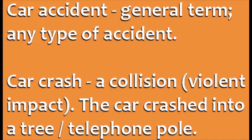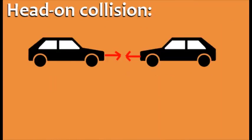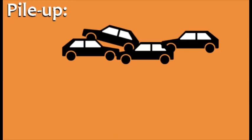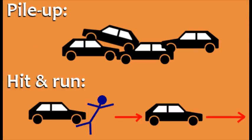Here are four specific types of accidents. When two vehicles crash into each other while traveling in opposite directions, we call this a head-on collision. This is one of the deadliest types of accidents. On the other end of the spectrum is a fender bender — a small accident with very minor damage to the cars involved. When multiple cars hit each other, this is called a pile-up. Pile-ups often occur when the weather and road conditions are bad. Sometimes a car hits a person, but instead of stopping, the driver drives away. This type of accident is called a hit-and-run.